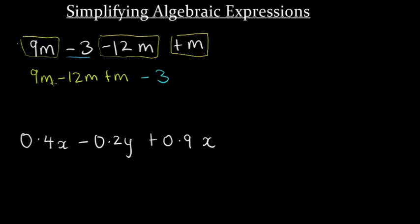We simplify the like terms by adding or subtracting the coefficients. Remember that when we see a variable without any coefficient, the coefficient is either positive or negative 1 — in this case, positive 1. So it would be 9 minus 12 plus 1, which gives us negative 2. We write back the variable m and rewrite the unlike term, which is negative 3. The answer is negative 2m minus 3.